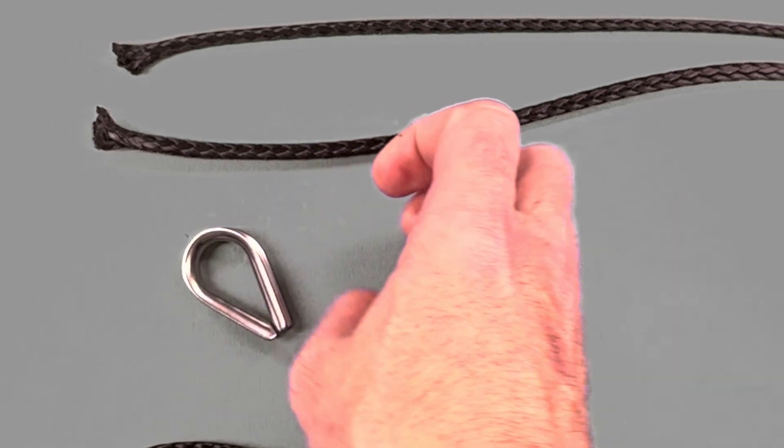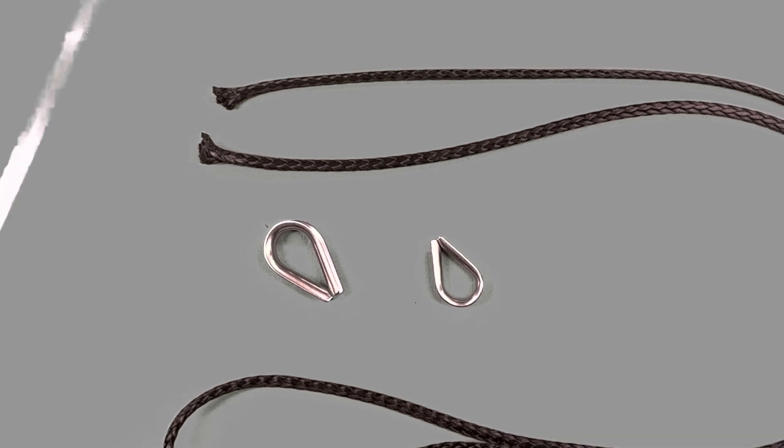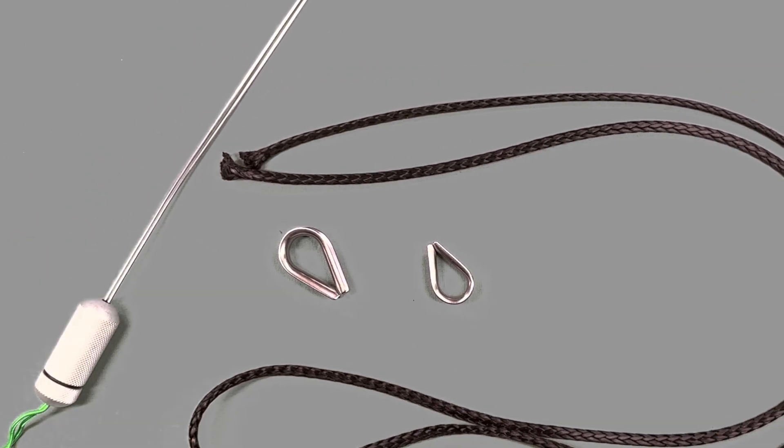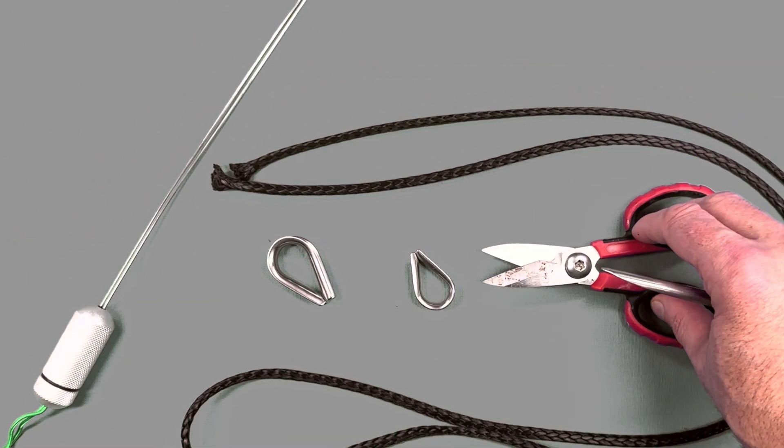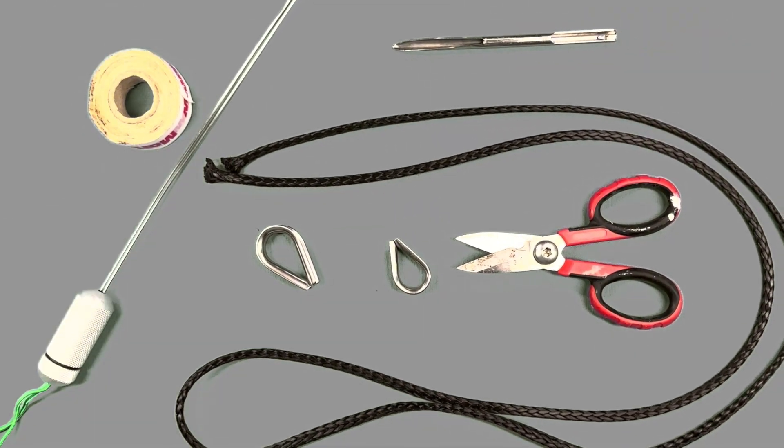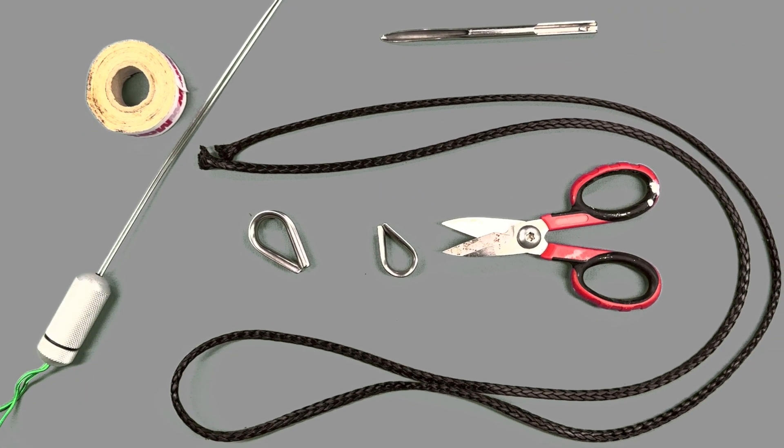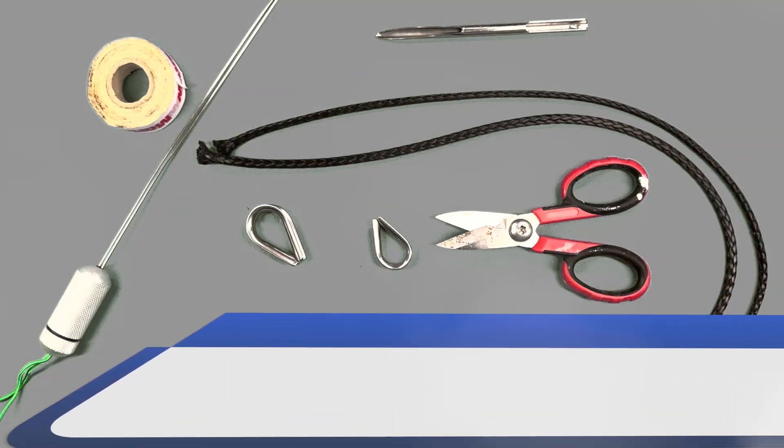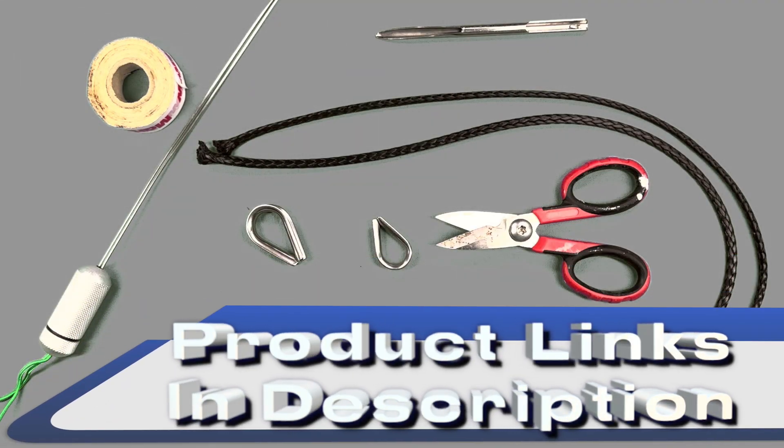For today's video we'll need a couple of meters of Dyneema, two thimbles, your D-splicer, a pair of scissors, a couple of standard fids, and a piece of tape. As per always, if you need any of this equipment please be sure to pick it up by using the product links in the description below.